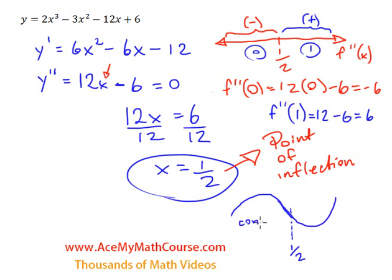So concave down. It faces down this way, right? Concave down. And here it's concave up. So that's it. That is basically the second derivative test. We just figure out concavity and the intervals in which the graph is concave up and concave down.